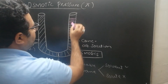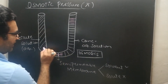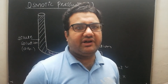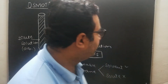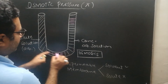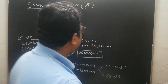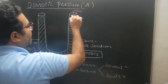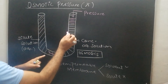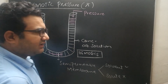You will see that the level of solution in this compartment will start rising because some of the water molecules move from the dilute solution side to the concentrated solution side. That is osmosis — it is natural. But now listen carefully: if you want to prevent the flow of water from the dilute solution towards the concentrated solution, you will have to apply some pressure.